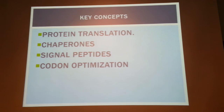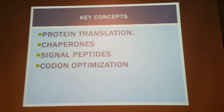Key concepts to be aware of include protein translation, chaperones, signal peptides, and codon optimization. Chaperones are specific proteins in E. coli that facilitate the folding of other proteins; they are also termed heat shock proteins because their activity is induced by heat. If you increase the temperature — for instance from 25 to 35 degrees — the organism tries to contain the damage by refolding proteins, because proteins are physical molecules whose conformation changes with temperature.